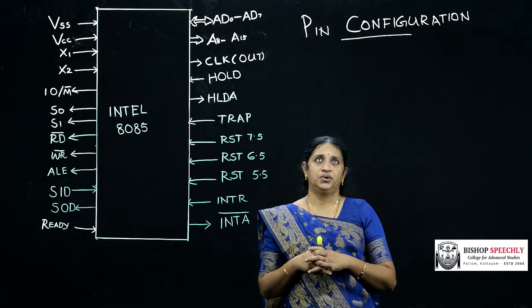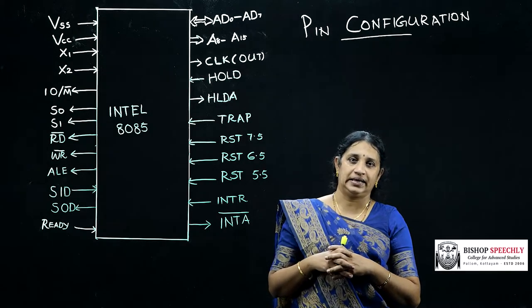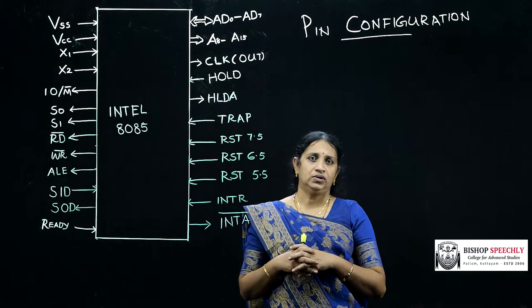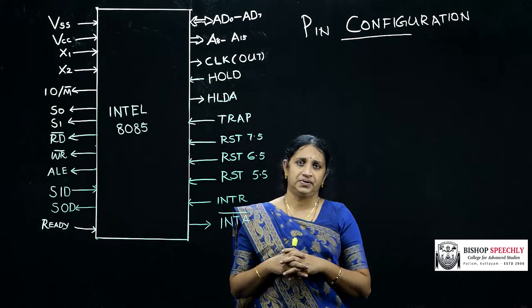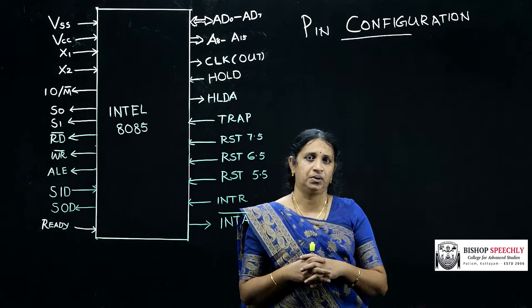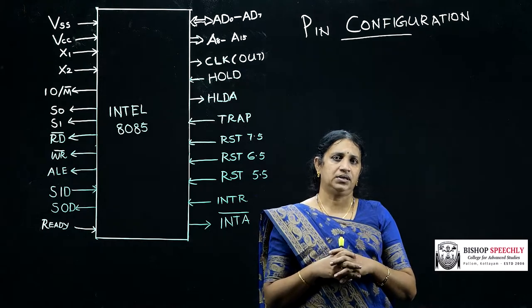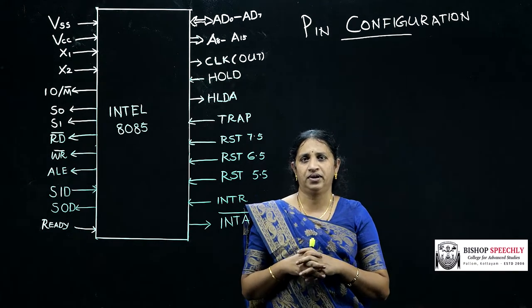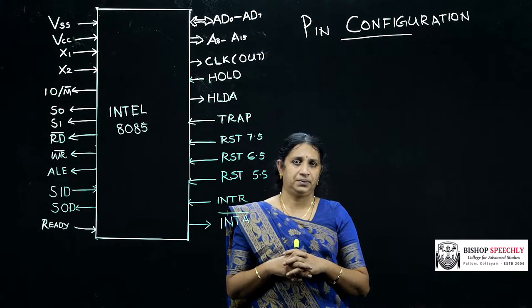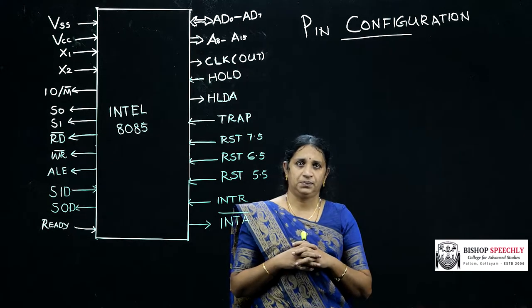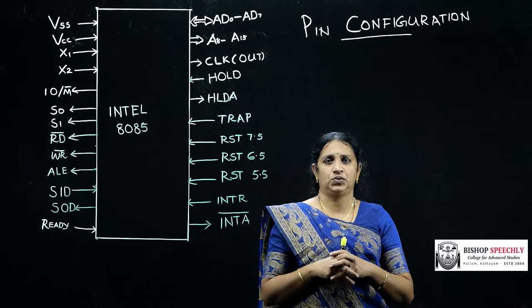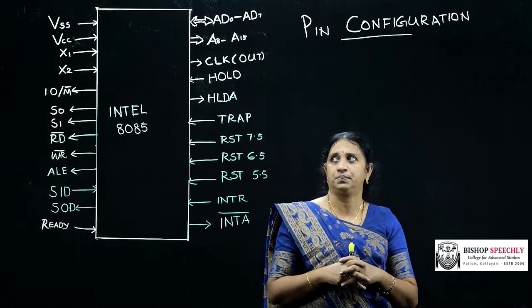Today we are going to learn about the pin configuration of Intel 8085. We all know that Intel 8085 is a microprocessor, a popular microprocessor. Its popularity was due to the availability of a large number of peripheral devices. There are 40 pins and this microprocessor operates on plus 5 volt supply.